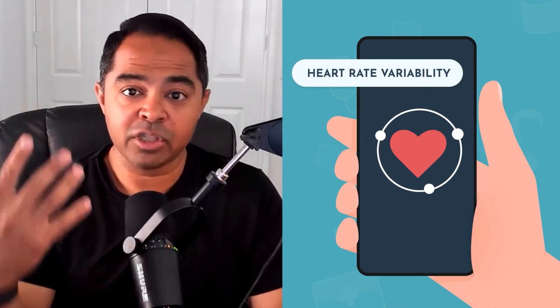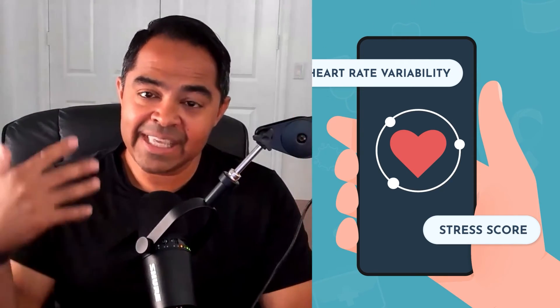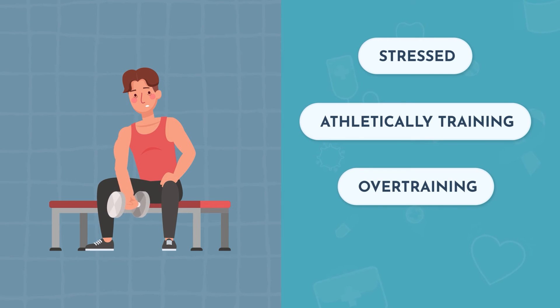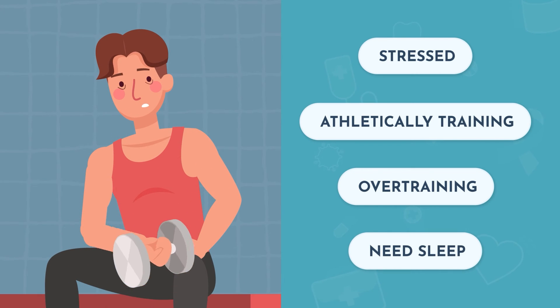They'll call it a heart rate variability or stress score, and you can use that to see where your body is at. If you know that your heart rate variability is low, that might mean a couple of things: you might be stressed, or if you're athletically training, you could be overtraining and need to back off a little bit. It might also mean you need a bit more sleep. It can be fascinating to monitor such a simple metric you're already checking to see how your health is doing — it's a really cool check-in.